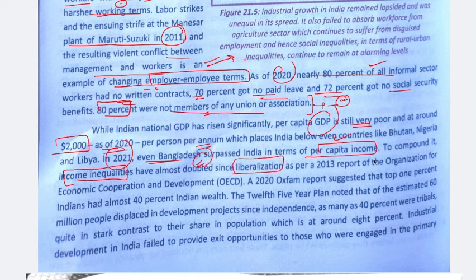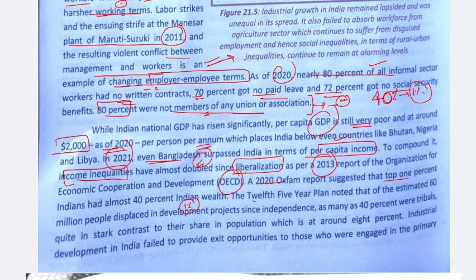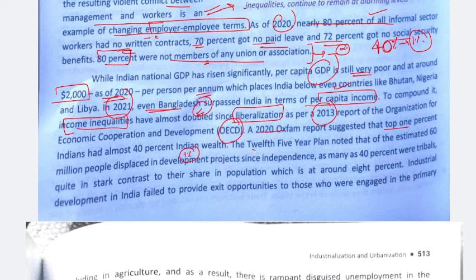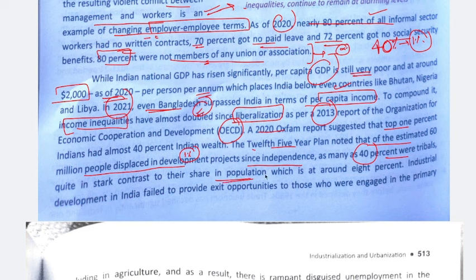In 2021, even Bangladesh surpassed India's per capita income. Income inequalities in India have doubled since liberalization. According to a 2020 Oxfam report, the top 1% of Indians hold almost 40% of India's wealth — meaning Ambani, Adani and similar elites hold enormous wealth while many people cannot arrange two meals a day. The 12th Five Year Plan noted that of an estimated 60 million people displaced by development projects since independence, as many as 40% were tribals — starkly contrasting their 8% share in population.